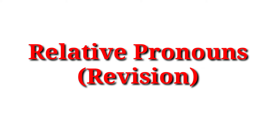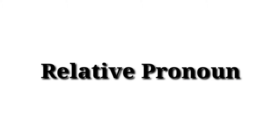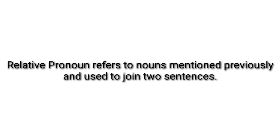Good morning. Today I'm going to explain relative pronouns. Let's see what relative pronouns are, what their use in the English language is, and what the common errors are that we make while using relative pronouns. Normally, a relative pronoun is used to join two sentences, and they refer to nouns mentioned previously. It may be a person, animal, thing, or an idea.